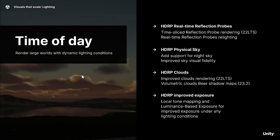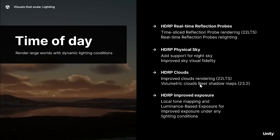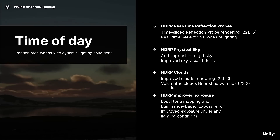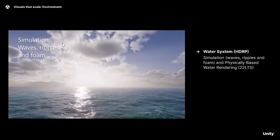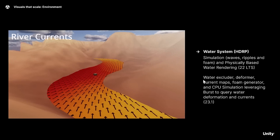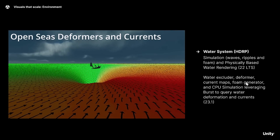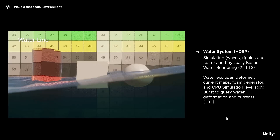For time of day, there are new dynamic skies in 2022, and in 2023.2 you're getting volumetric clouds with beer shadow maps. Ray tracing is coming out of preview in 23.1 for the HDRP ray tracing API. There's also VFX graph and terrain height map support. On the environment side, the new water system that arrived at the end of last year is getting improvements in 23.1: water excluders, deformers, current maps, foam generators, and CPU simulation leveraging the Burst compiler to query water deformations and currents — giving you a lot more control over water systems.